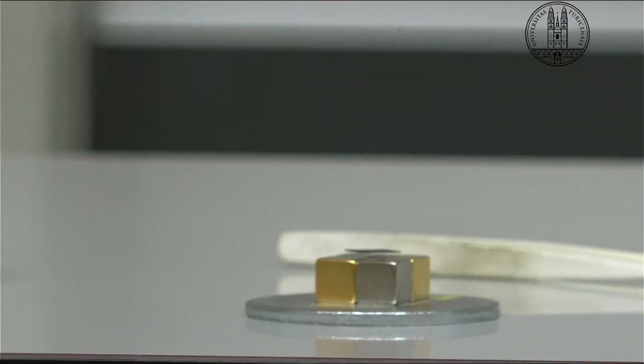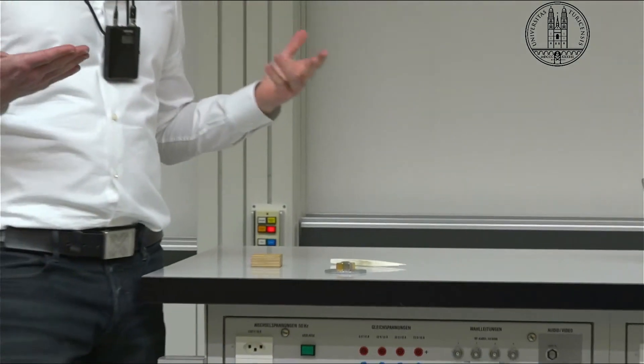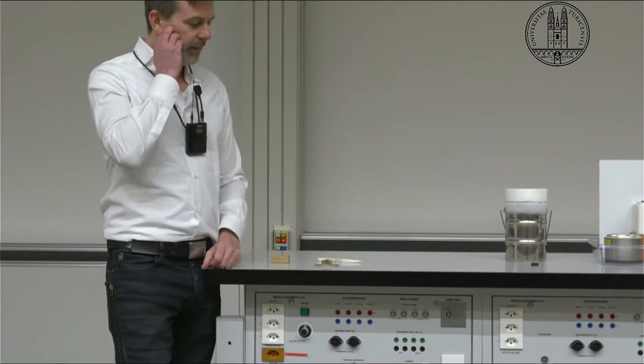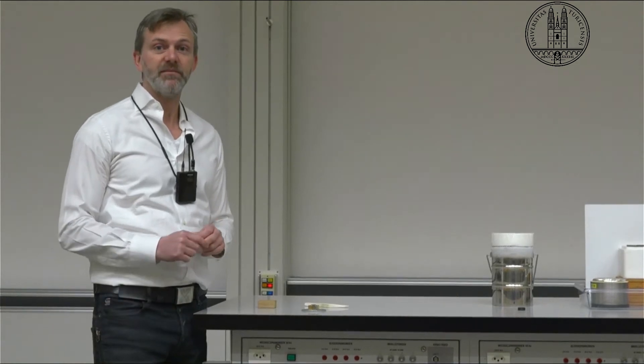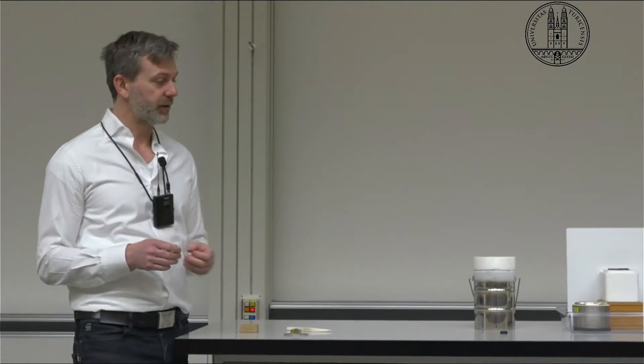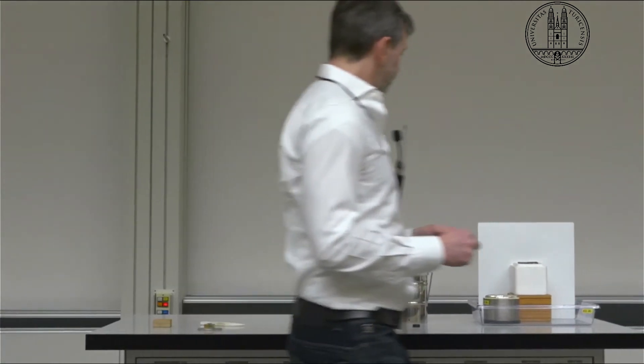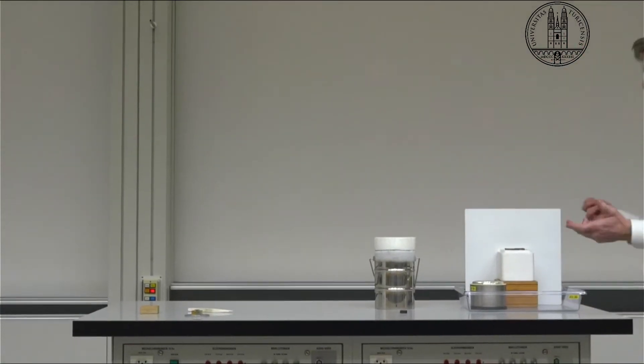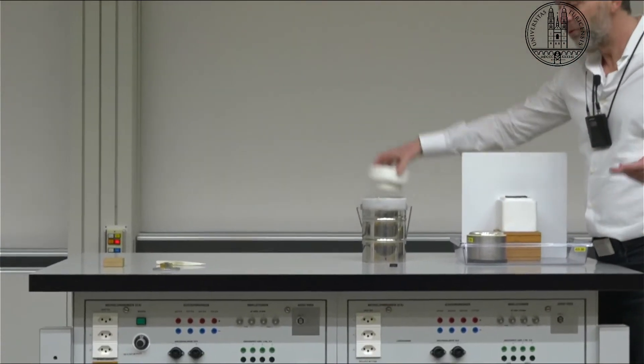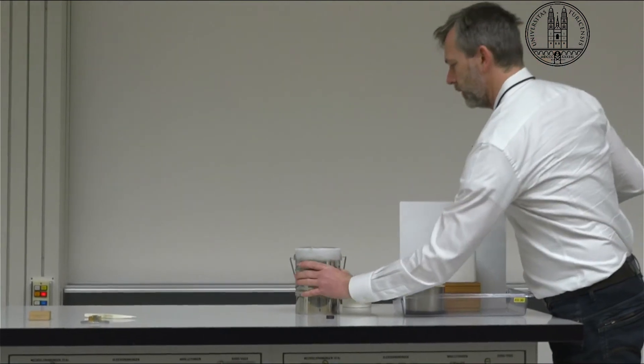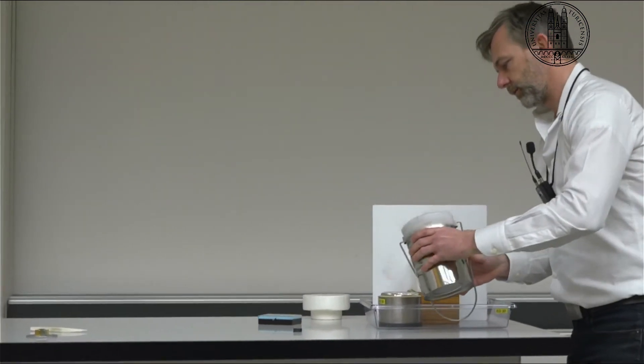So another, this is what they call a diamagnet, and a perfect diamagnet is a superconductor. And so we can take a look at a superconductor here, but there are no room temperature superconductors. So I will need some liquid nitrogen here.